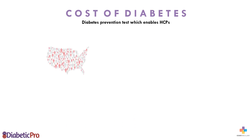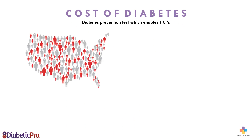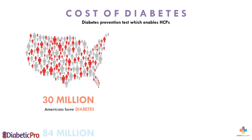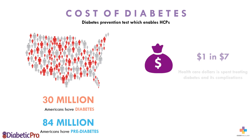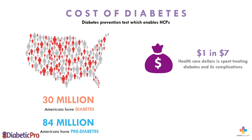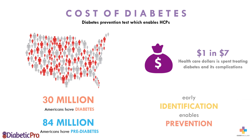More than 30 million Americans have type 2 diabetes, with another 84 million with prediabetes. Currently, one in seven healthcare dollars is spent on diabetes care or prevention. Early detection of individuals at risk for type 2 diabetes enables prevention.